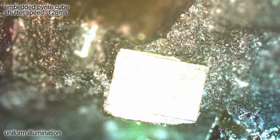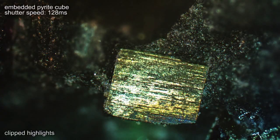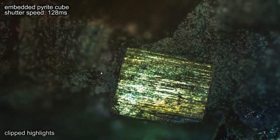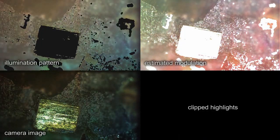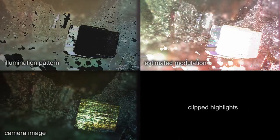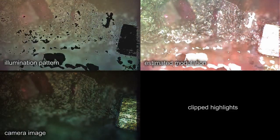Strong highlights that result from reflection or from scattering can be suppressed to further improve the visibility. We detect such highlights in the estimated modulation and clip them in the computed illumination pattern. The non-clipped areas can still be contrast enhanced.